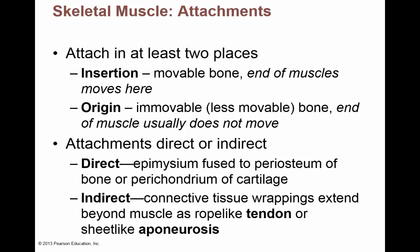Sometimes the bone doesn't move at all. Attachments from muscle to bone can be direct or indirect. Direct means the epimysium on the outside of the muscle fuses directly to the periosteum of the bone or to the perichondrium of cartilage. An indirect attachment means all that outside connective tissue comes together and forms a tendon. That tendon attaches to bone, or forms a sheet-like tendon known as an aponeurosis, which attaches muscle to bone or muscle to muscle.